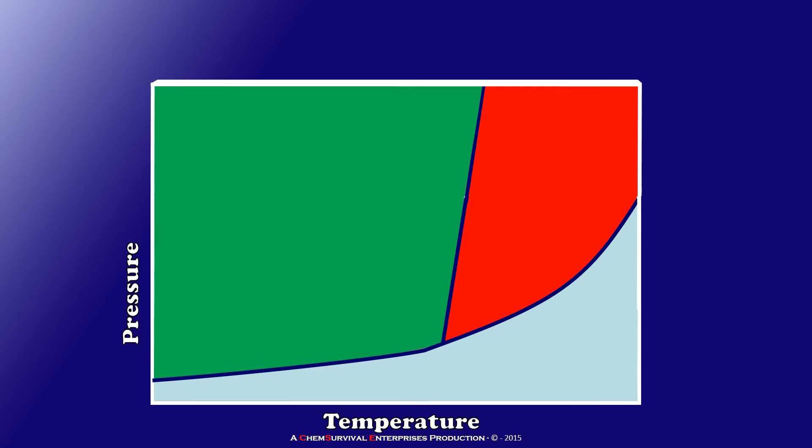Shown here is a phase diagram, the likes of which you've probably seen many times during general chemistry. It has a pressure and temperature axis and three fields for the common phases of matter: solids, liquids, and gases.